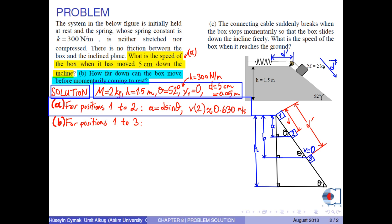For positions 1 to 3, according to the right triangle, we have height B equals distance D prime times sin θ. Now we write the conservation of total energy as follows.